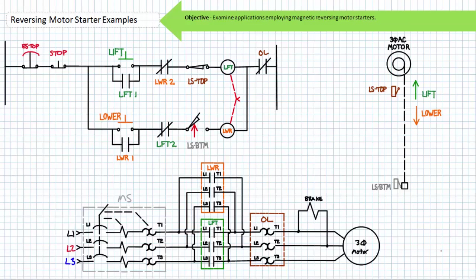Assuming the system begins the day with the door closed, the normally closed bottom limit switch would be activated into its opposite open state. The arrow modifier indicates this is a normally closed limit switch being held open. This open limit switch prevents an unusually dull operator from attempting to lower an already lowered door — any closure of the lower button serves no purpose since the triggered bottom limit switch prevents the lower contactor coil from being energized.